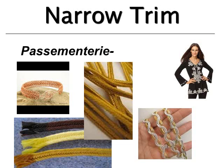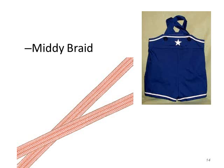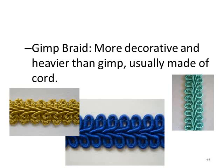Here are all the different types of passimentary. This type of braiding here is like the fishtail braid that was really popular in hairstyles. The gimp braid is more decorative and heavier than the midi braid, usually made of cord. The distinctive feature of the gimp braid is that it has a V shape with curls on the end, all going in the same direction.